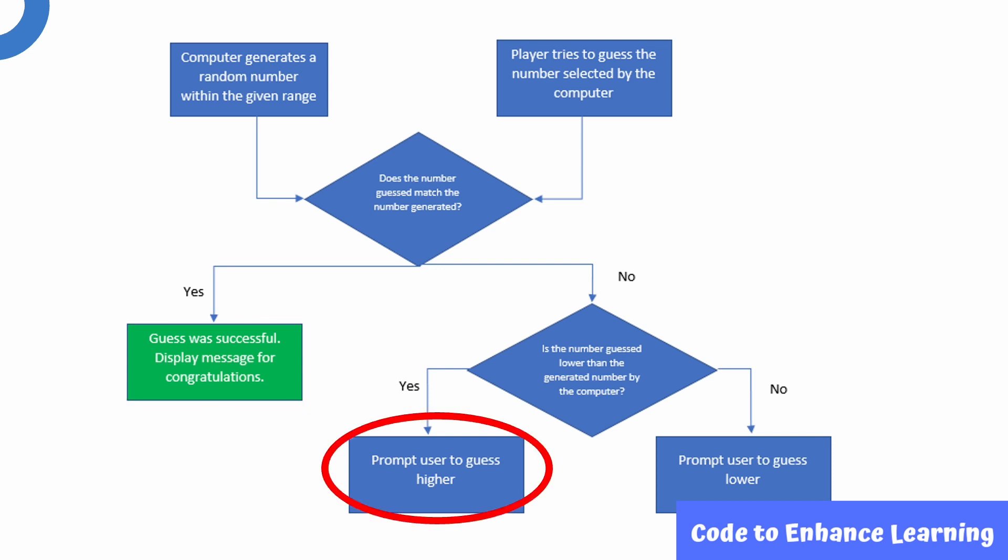Here, the player needs to use his or her knowledge of number comparison. Similarly, if the number guessed is higher, then the player is prompted to guess lower. Here, the player again needs to use the knowledge of number comparison. You can give the player as many attempts as you wish. I will be restricting myself to the range of 1 to 10 with 3 attempts.